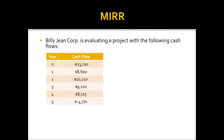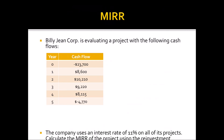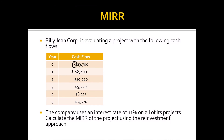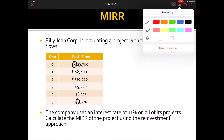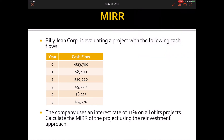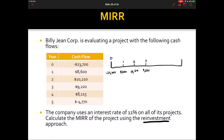Example: Billie Jean is evaluating a project with an unconventional cash flow pattern — you cannot use regular IRR here because there's a cash outflow at the end. Cash flows: year zero negative $23,700; year one $8,600 inflow; year two $10,210 inflow; year three $9,220 inflow; year four $8,115 inflow; year five negative $4,770 outflow. The company uses an interest rate of 11%. We'll calculate the modified IRR using the reinvestment approach.